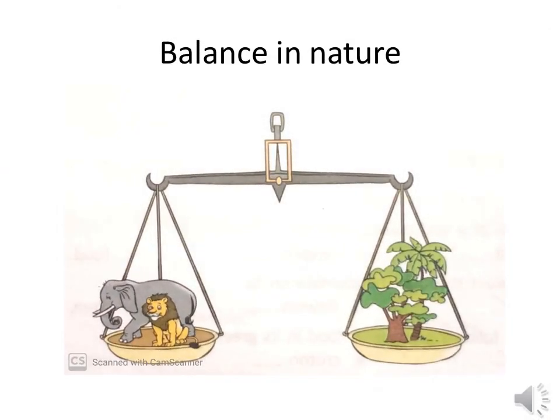Balance in Nature: A balance needs to be maintained between the number of plants and animals. What will happen if there is a sudden increase in the number of animals? Plants may not be able to supply enough food and oxygen to all the animals.